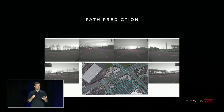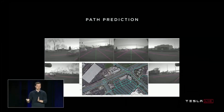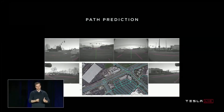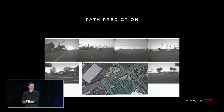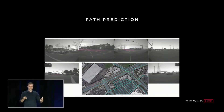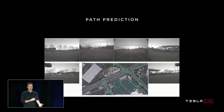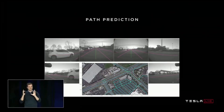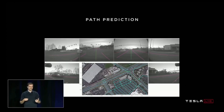We can use this for supervision for the network. We source a lot of this from the fleet, train a neural network on those trajectories, and then the neural network predicts paths just from that data.